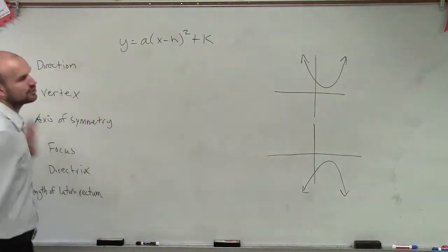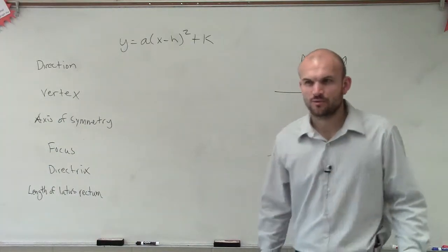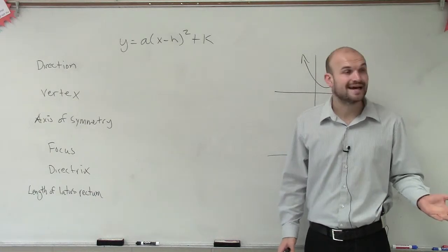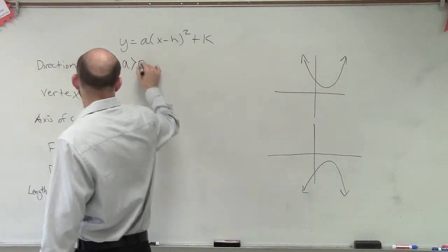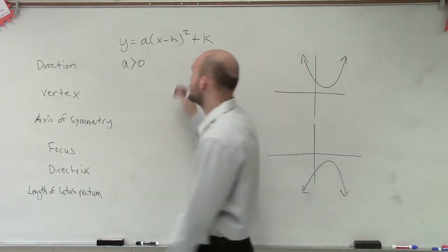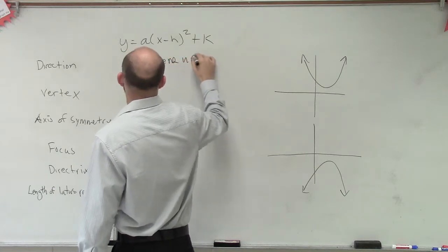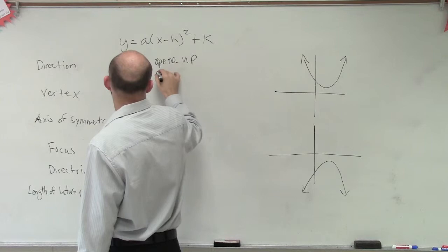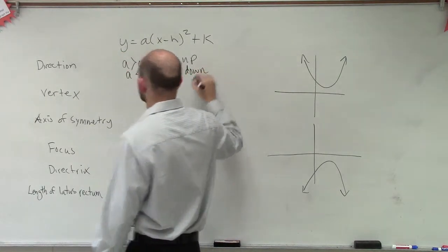So how do we determine the direction of the opening? Do you guys remember on transformations? What tells us if it opens up or opens down? Which letter? A, right? So if A is greater than 0, our graph opens up. And if A is less than 0, then our graph opens down.